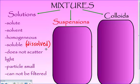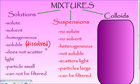Suspensions are different. When you look at suspensions, they don't have a solute and solvent because the substances in a suspension are not dissolving — they are not soluble. So you don't have a solute and you don't have a solvent. They're heterogeneous, meaning if I take a sample from the top and the bottom, the samples are not the same. That's like sand and water — they can't dissolve, so there's no solute and no solvent.